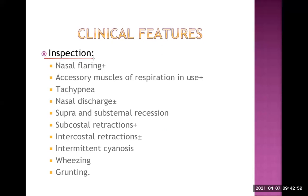Examination of the respiratory system is done under four headings: inspection, palpation, percussion, and auscultation. On inspection, nasal flaring is present — a feature of respiratory distress. Accessory muscles are in use, including sternocleidomastoid, trapezius, external abdominal wall muscles, and intercostal muscles. Tachypnea is evident on counting the respiratory rate.